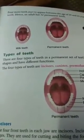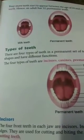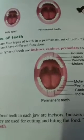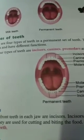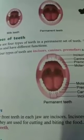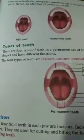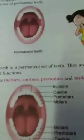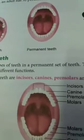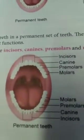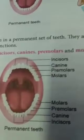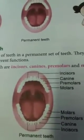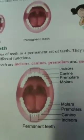At the age of 6, these milk teeth start falling and another set of teeth starts appearing — that is called permanent teeth. By the age of 14, a child has almost 28 permanent teeth. Then 4 more teeth appear between the age of 20 and 25. They are called wisdom teeth. Hence an adult has 32 permanent teeth.